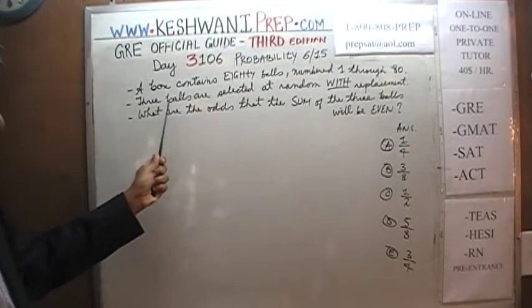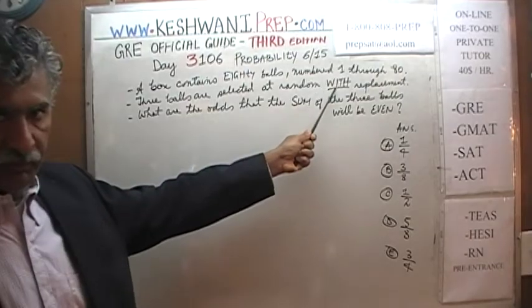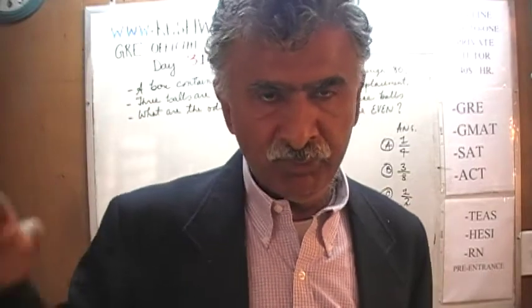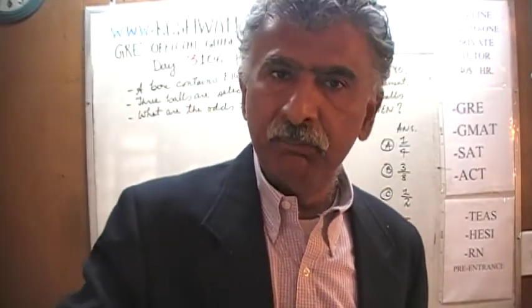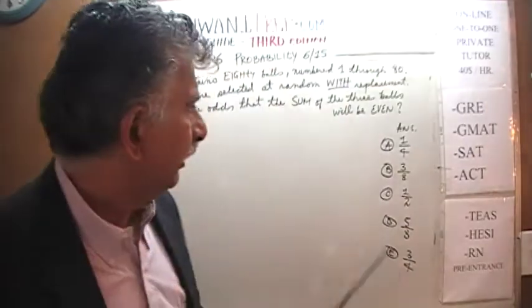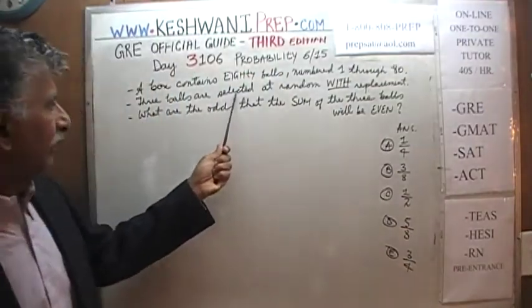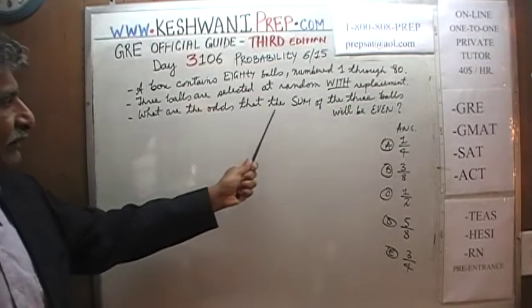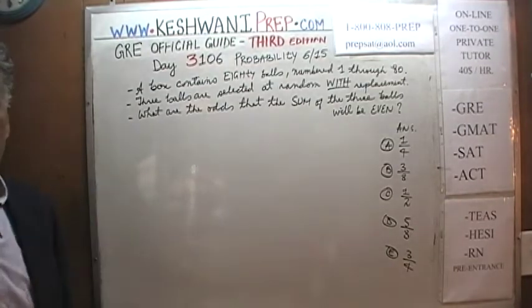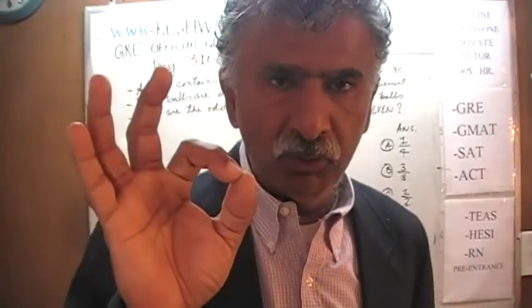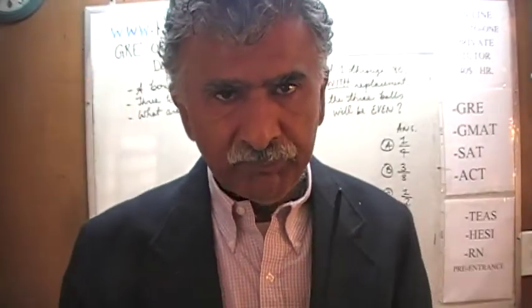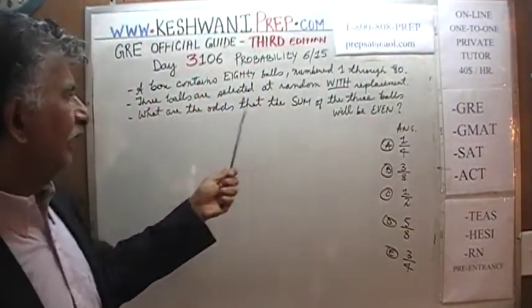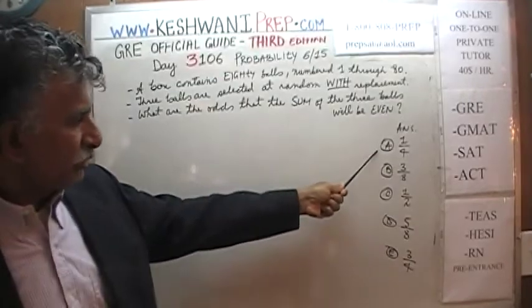3 bowls are to be selected at random with replacement. So we're going to pick one bowl, make a note of what number it has on it, put it back, pick a second bowl, make a note of the number, and so forth. The question is: what are the odds that the sum of the 3 bowls will be even?